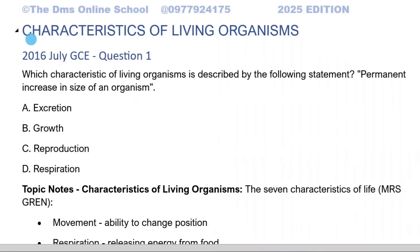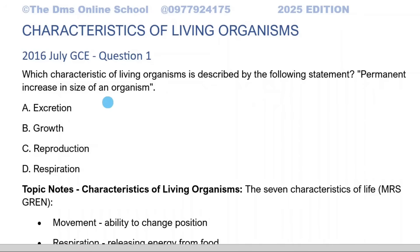This is the first topic in biology: characteristics of living organisms. This is the question which came from 2016 July GCE, question one. You'll find this question which says, which characteristics of living organisms is described by the following statement? Permanent increase in size of an organism. The options were: A, excretion; B, growth; C, reproduction; D, respiration. So before we answer, here are the topic notes.